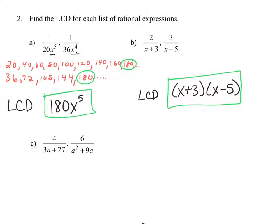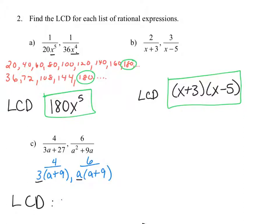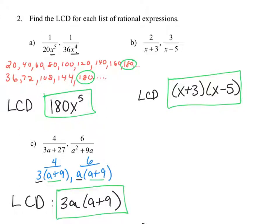For example C, we should factor before we find the LCD. The first rational expression can be written as 4 over 3 times a plus 9, and the second fraction is 6 over a times a plus 9. So our LCD is going to include the coefficients 3 and a — giving us 3a — and it's also going to include the common factor of a plus 9. The LCD can be written as 3a times the quantity a plus 9, or distributed as 3a squared plus 27a.